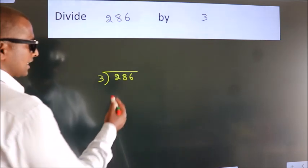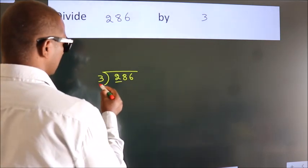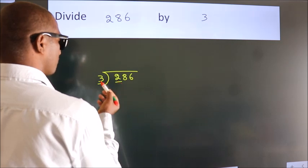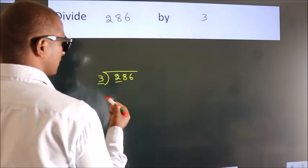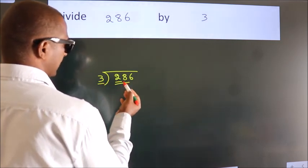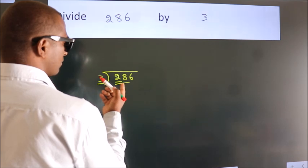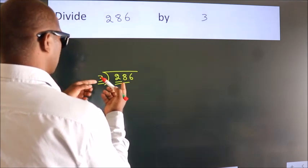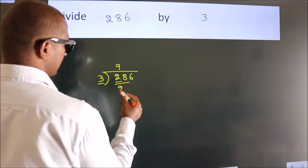Next, here we have 2, here 3. 2 is smaller than 3. So we should take 2 numbers, 28. A number close to 28 in the 3 table is 3 nines, 27.